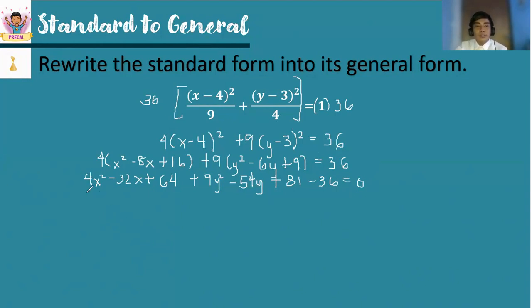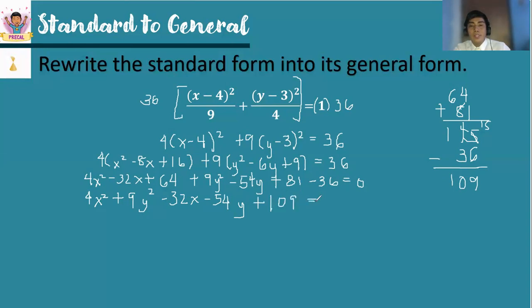So we simplify by arranging the terms of the general form. So we have 4x², xy is missing, so the next part will be 9y². Then the x part, the linear part, -32x. And the linear part of y is -54y. Next is we add 64 and 81 minus 36. So 64 plus 81 is 145 minus 36. So that is +109 = 0. Did you get it?